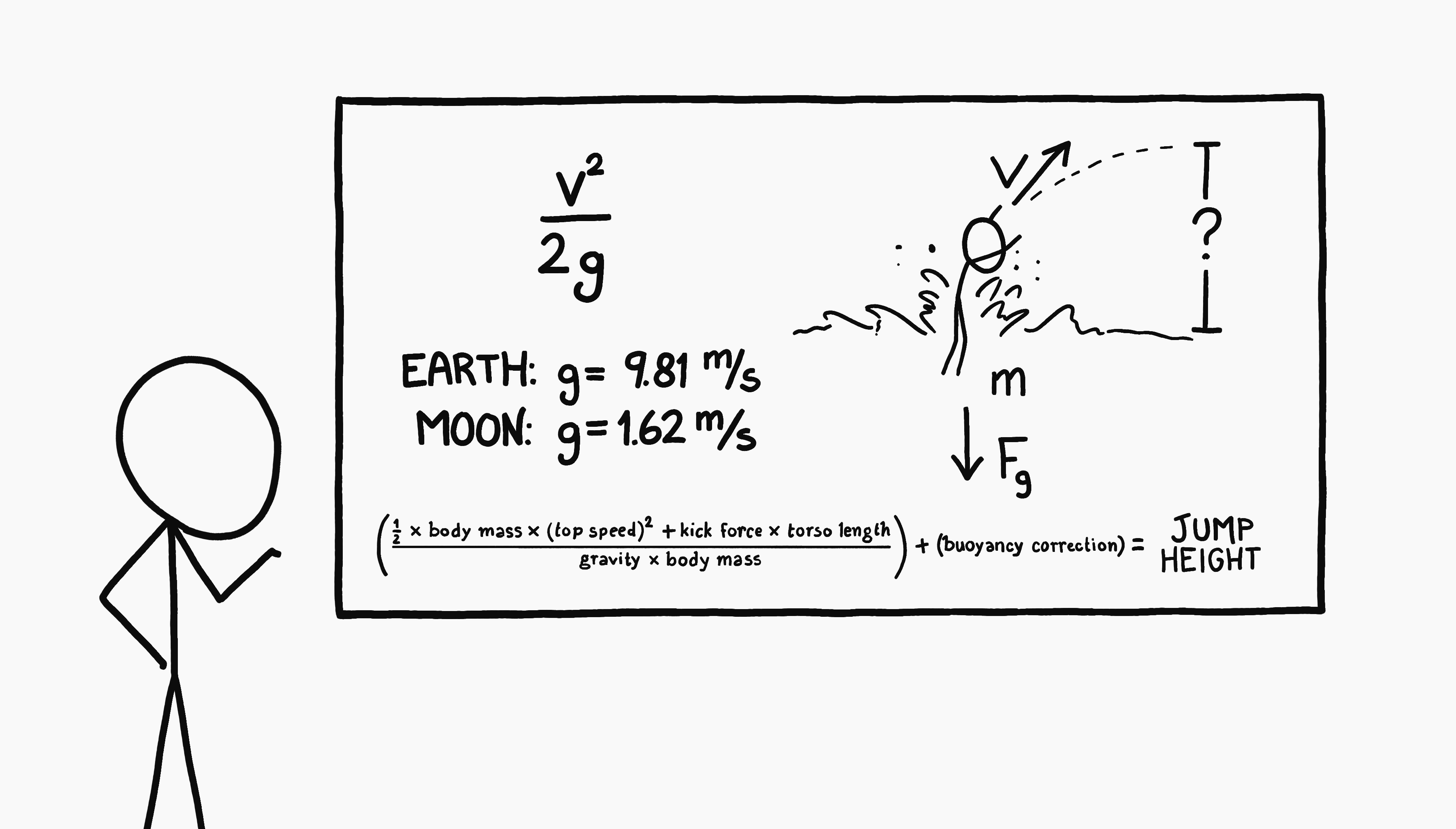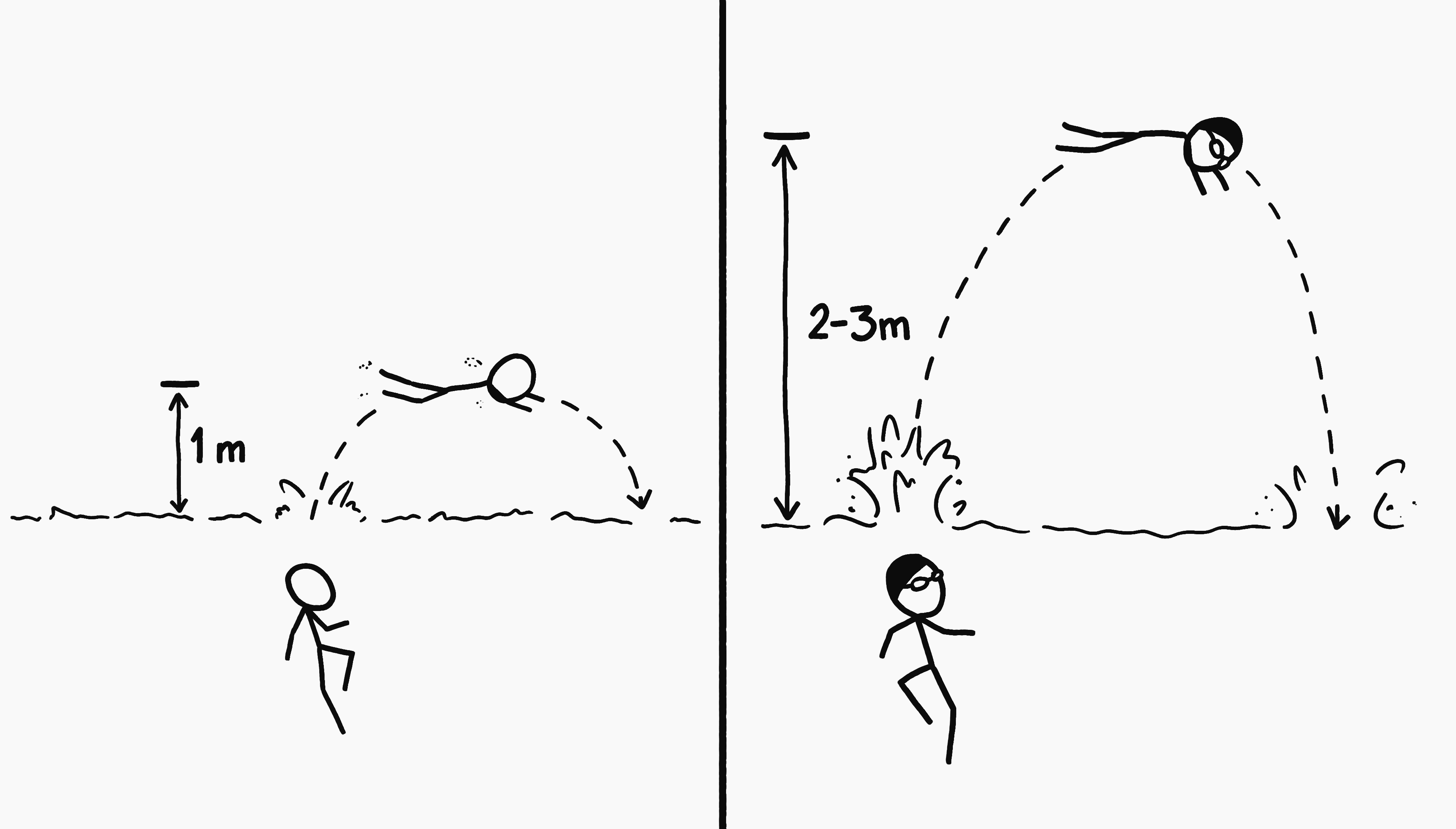Calculating the height a swimmer can jump out of the water requires taking several different things into account, but the bottom line is that a normal swimmer on the moon could probably launch themselves a full meter out of the water. An Olympic swimmer like Michael Phelps might manage 2 or 3 meters.